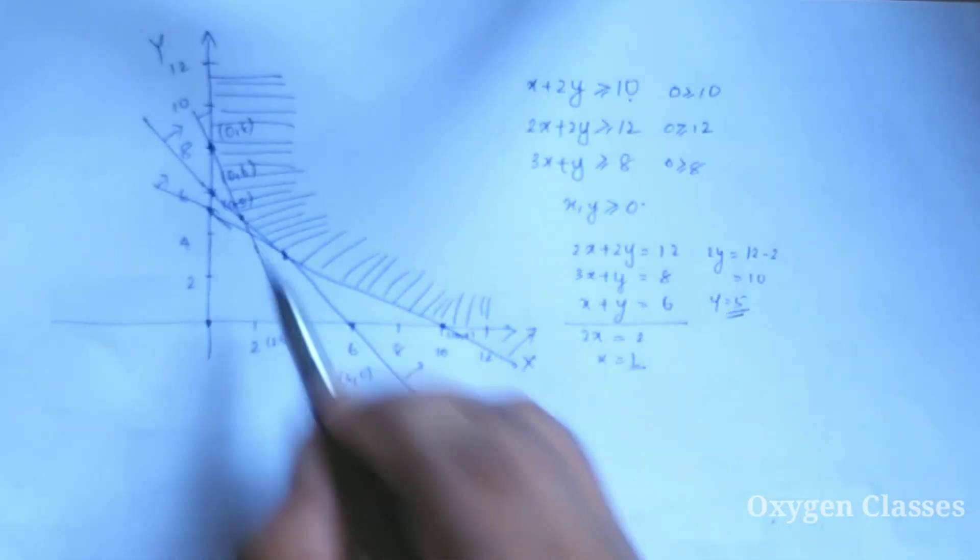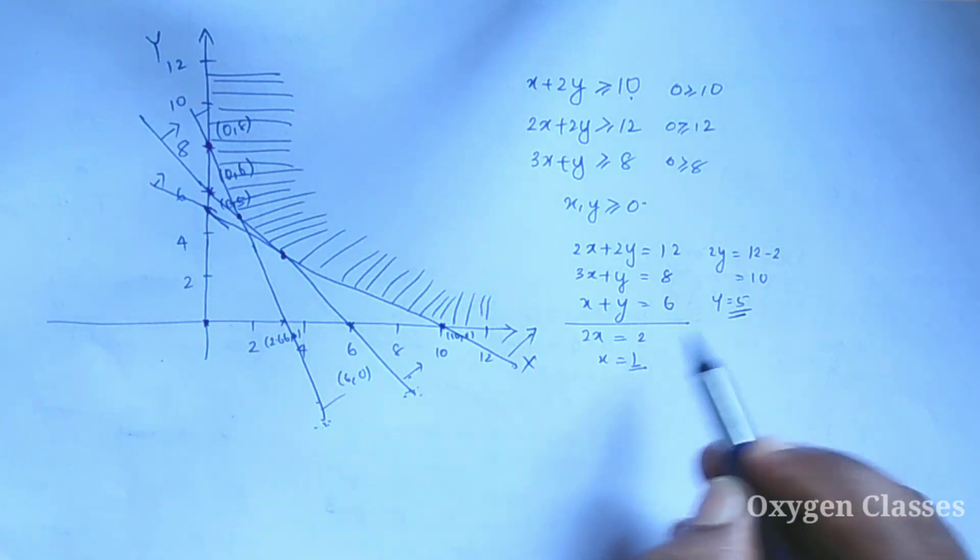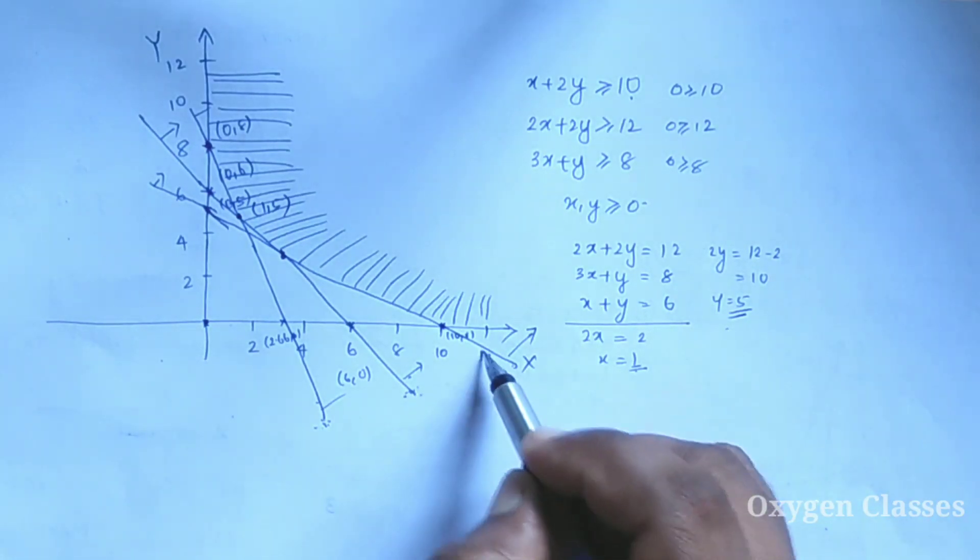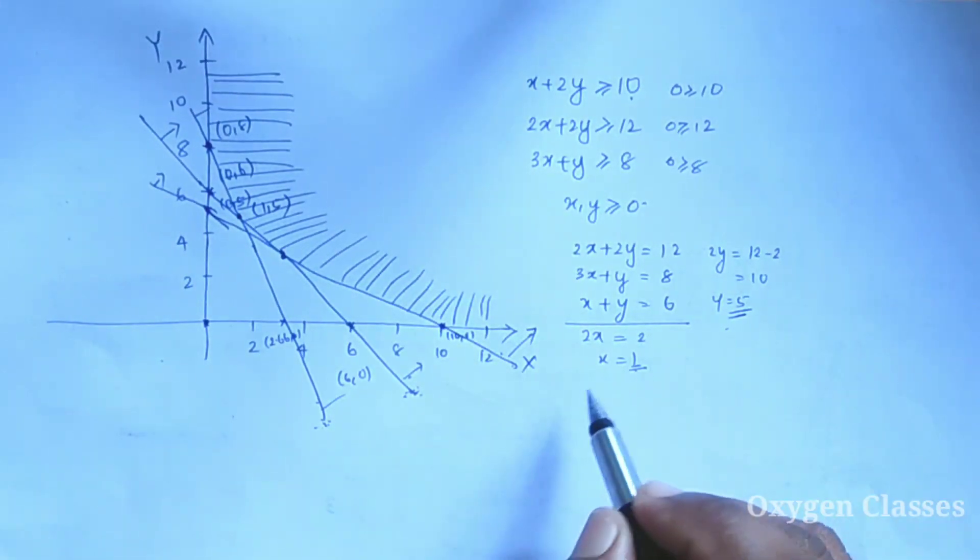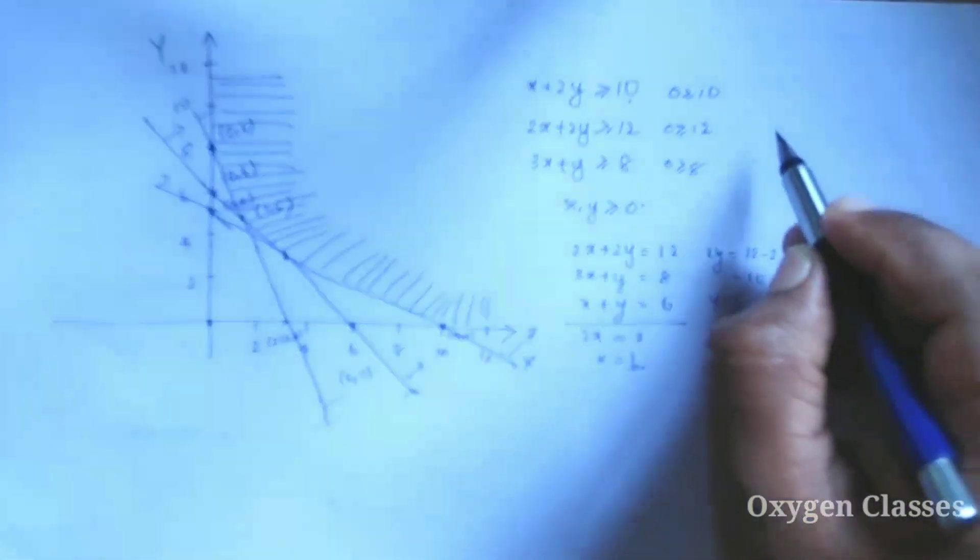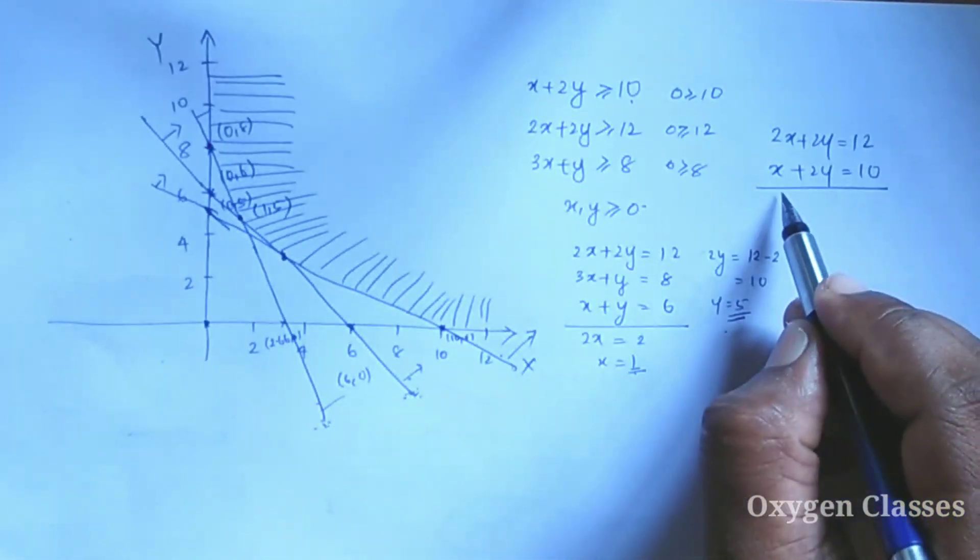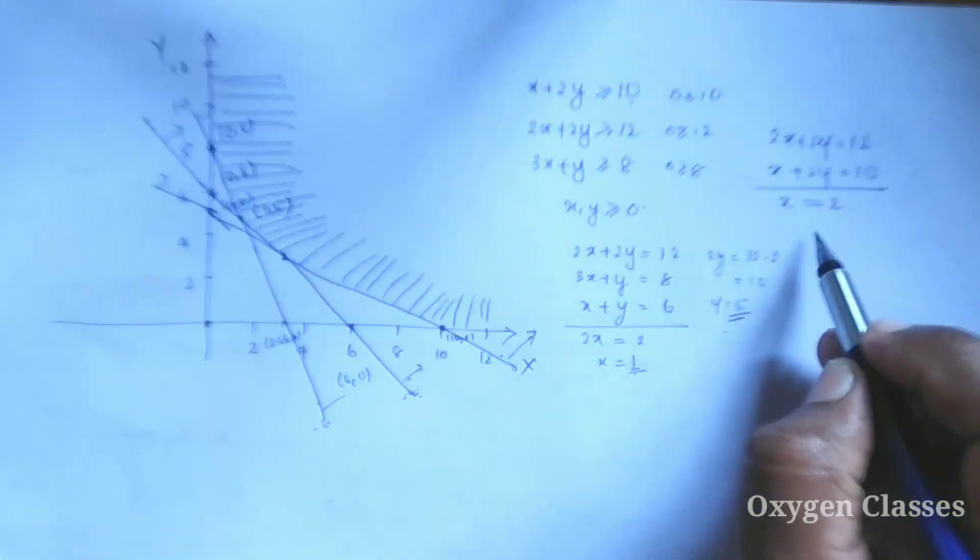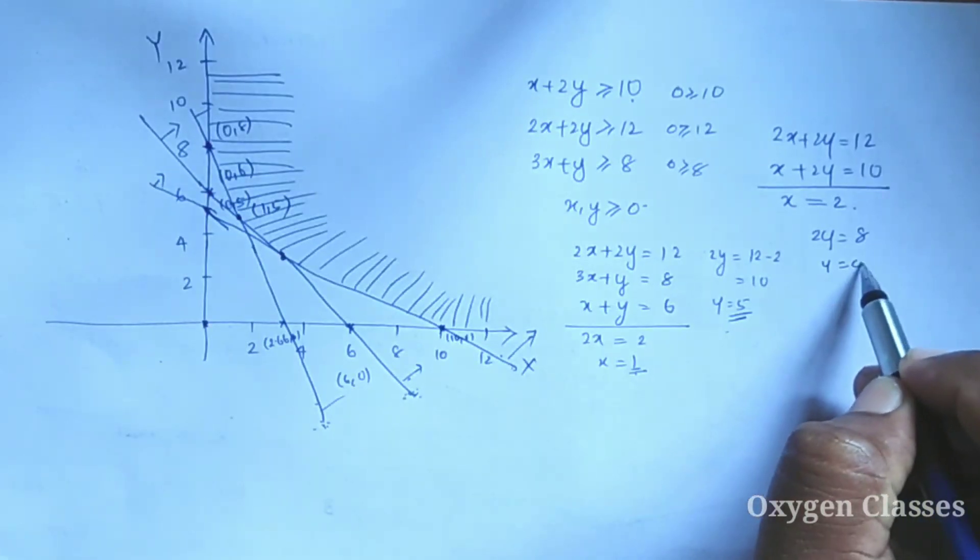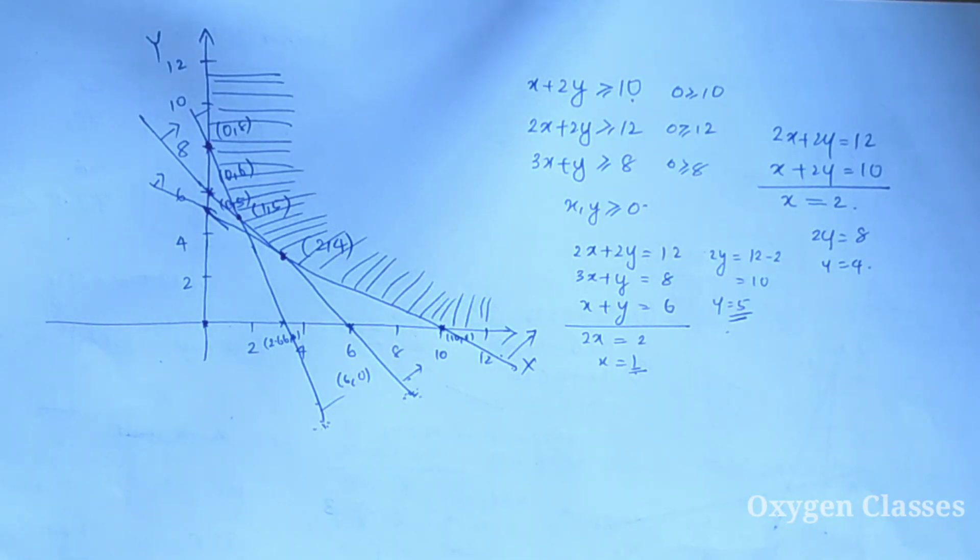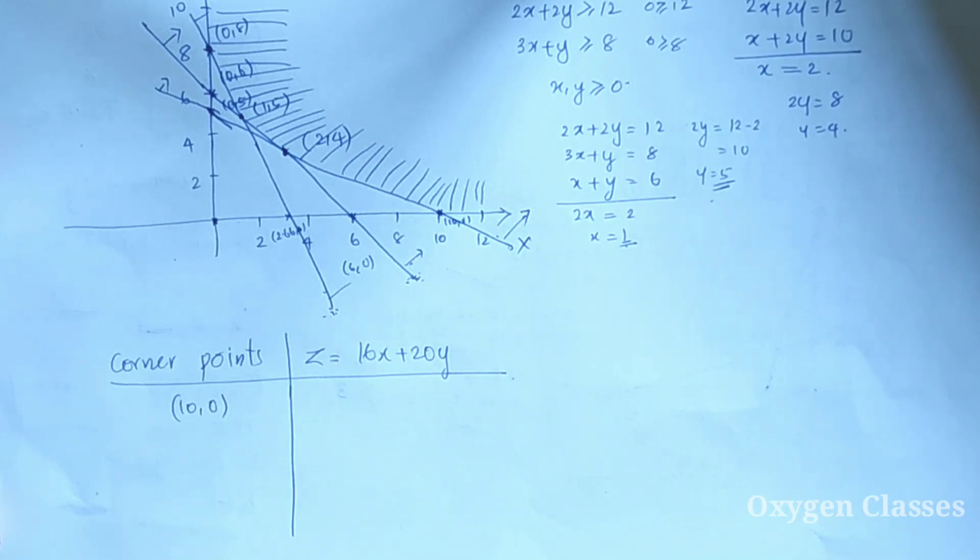One point is the intersection of the two lines, which is (1, 5). Another point is found by solving the first and second lines. The first line: X plus 2Y equal to 10. Subtracting gives X equal to 2, so Y equal to 4. Therefore this point is (2, 4).